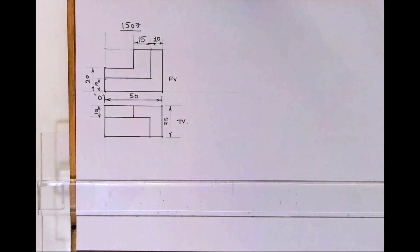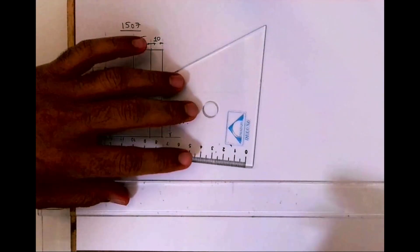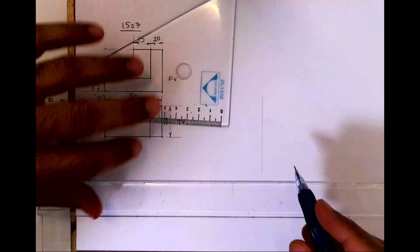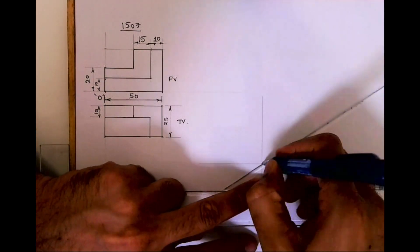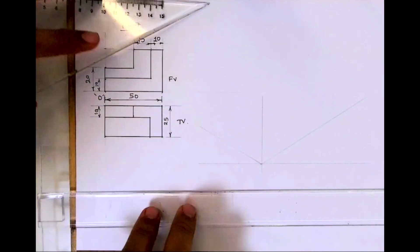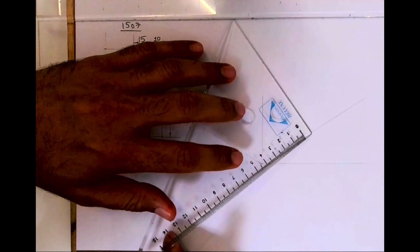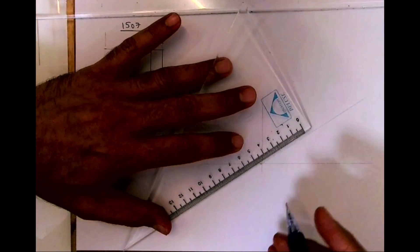Welcome to technical drawing. Today we'll solve this sum in isometric. First we will draw layout, we'll draw vertical and horizontal line, then we'll draw 30 degree. After that length is 50, so I'll mark 50 on right side.